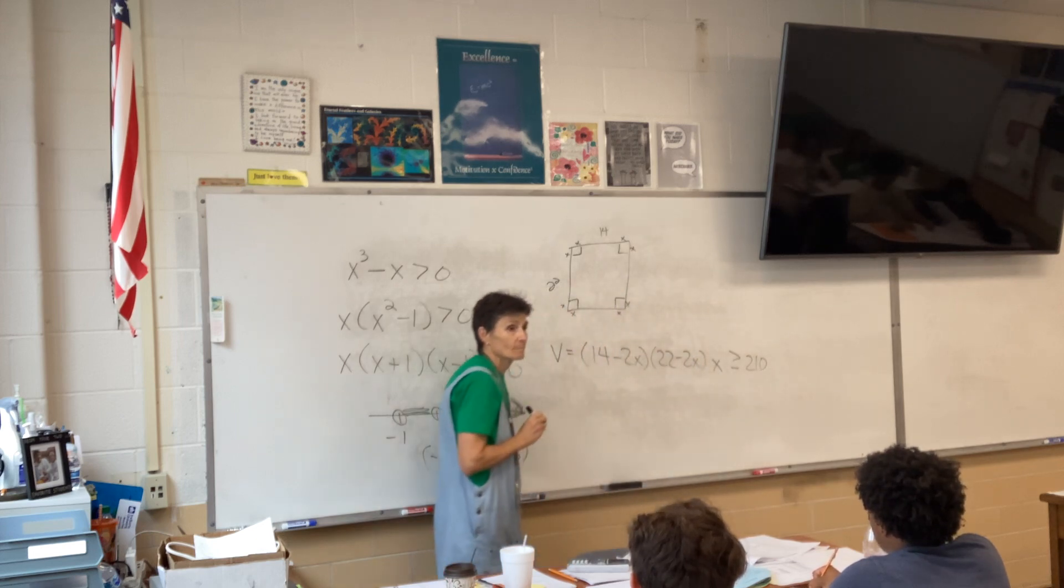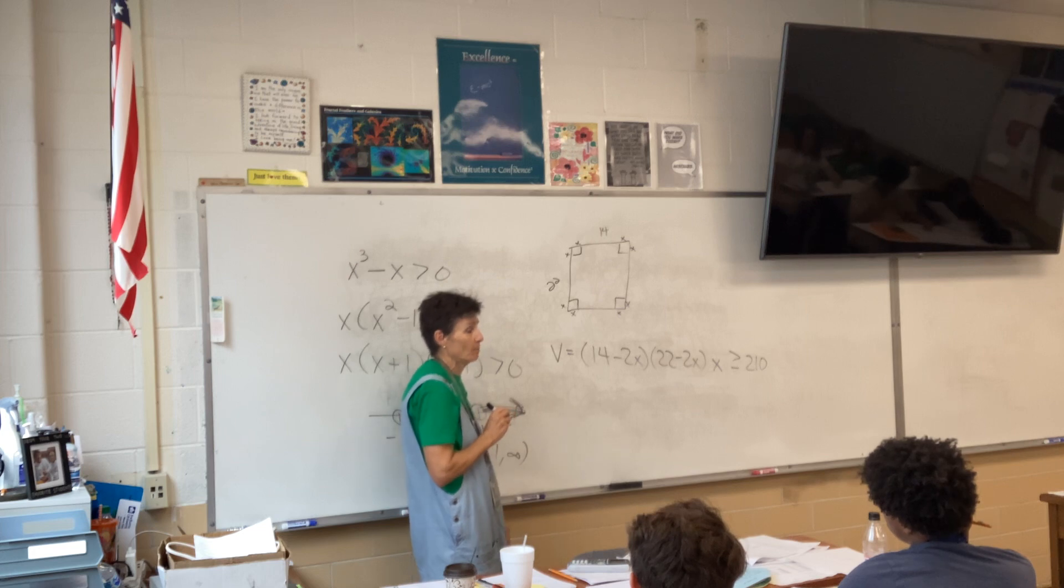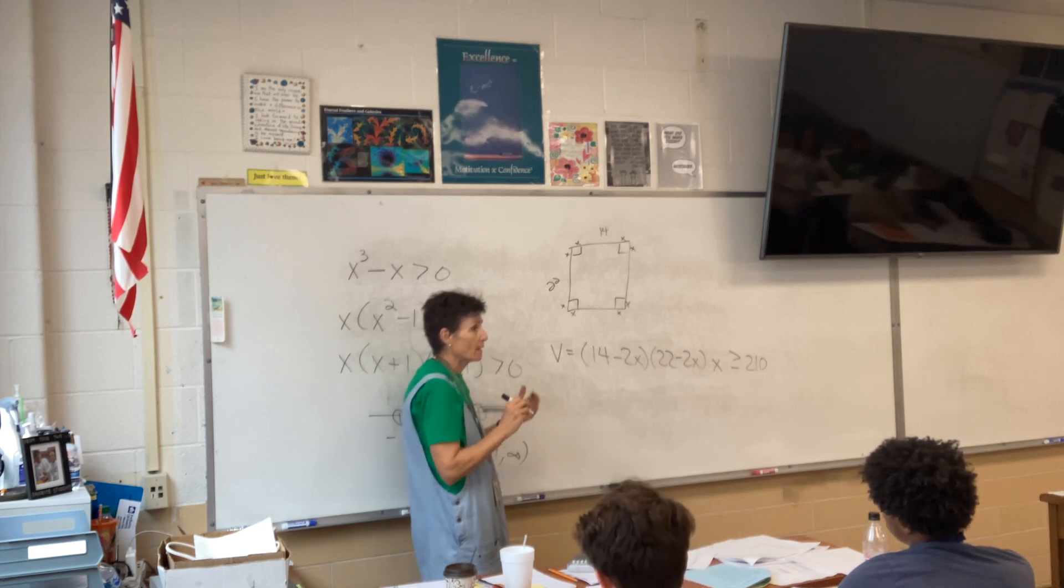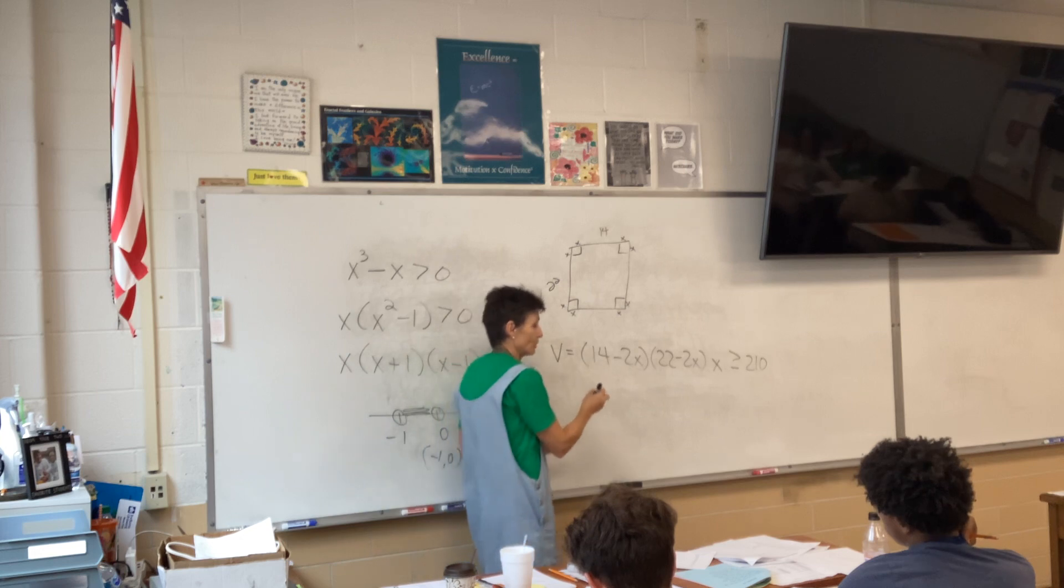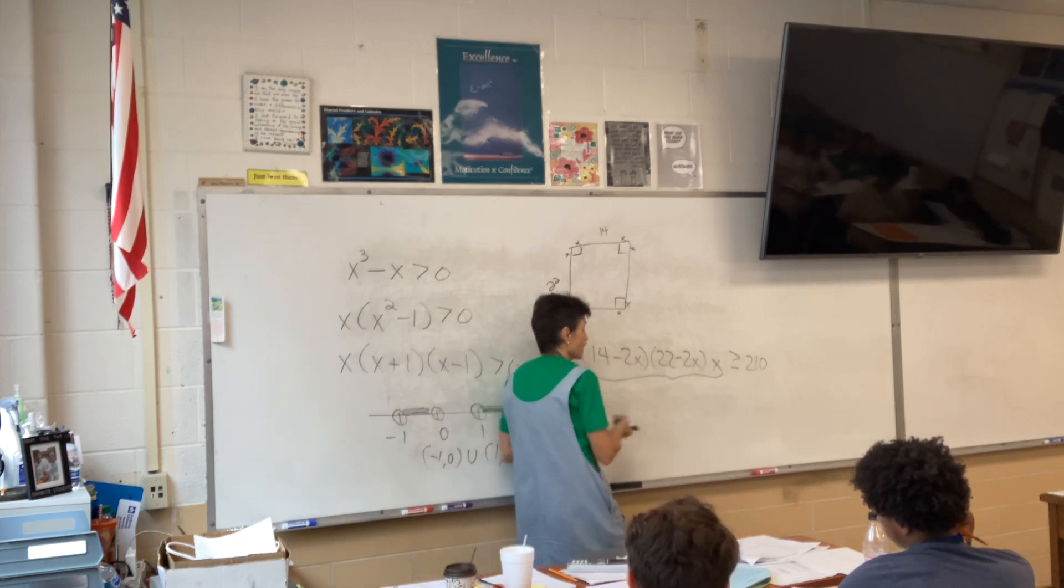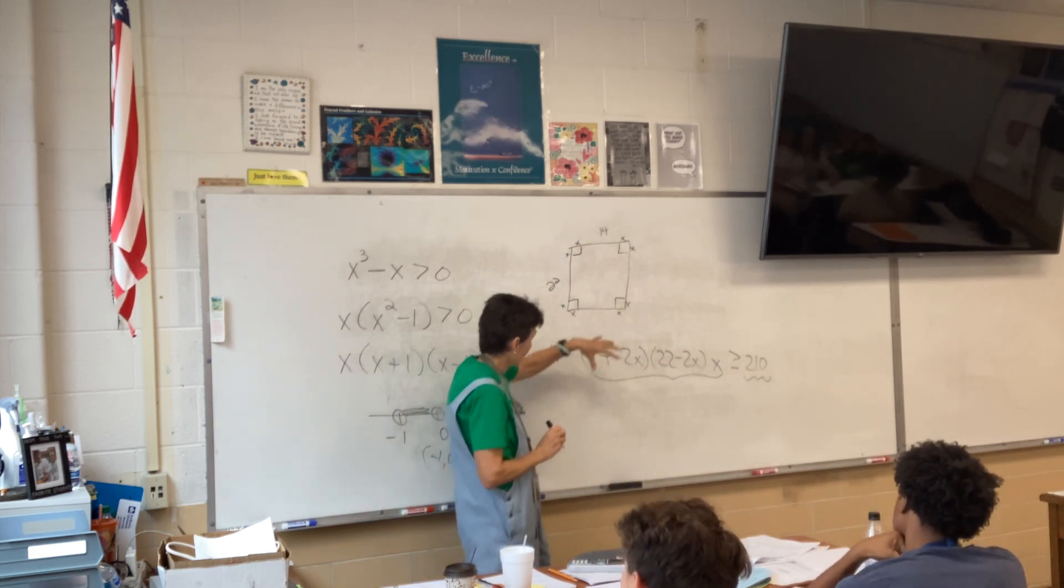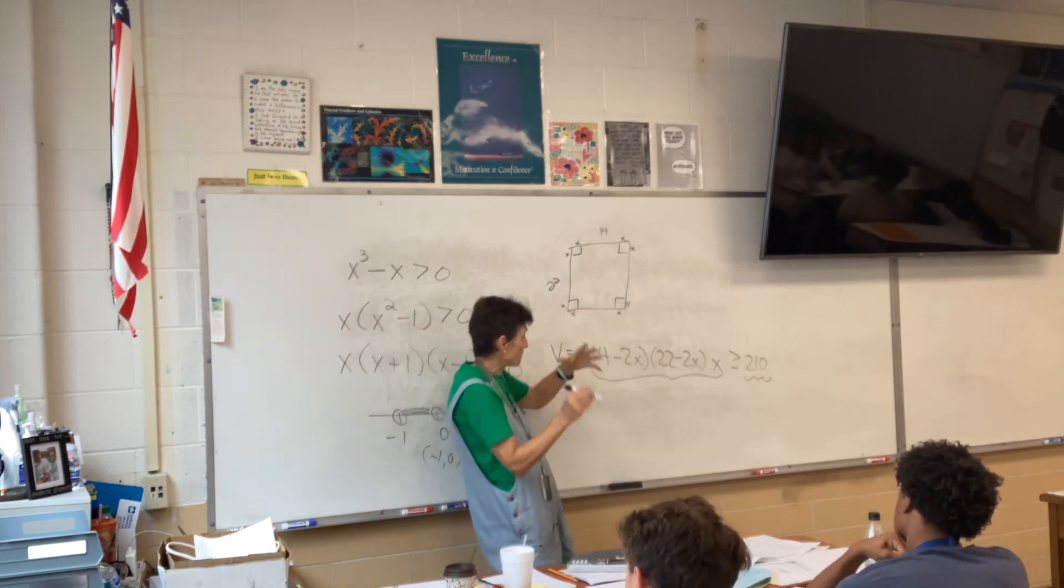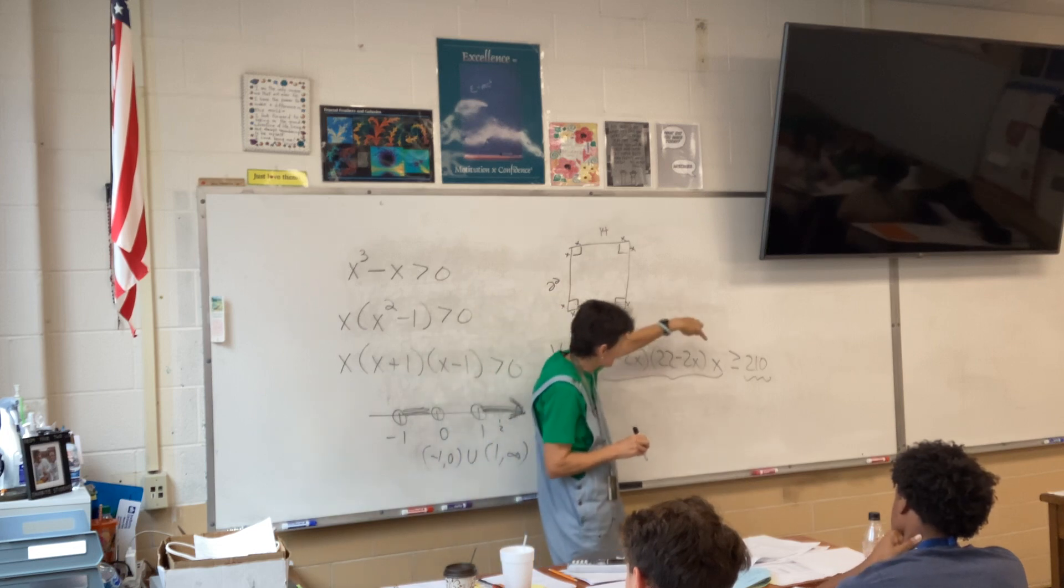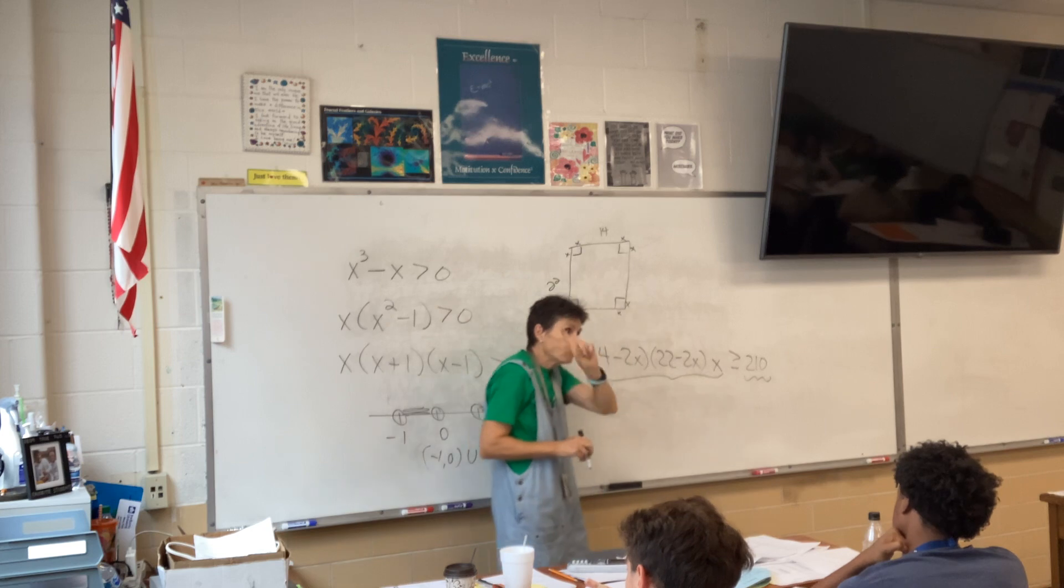And then, so, that's length and width. What's the height? X. Just X. Now, that's the volume of the box. We need the volume to be at least 210. So, doesn't that mean greater than or equal to 210? Mm-hmm.